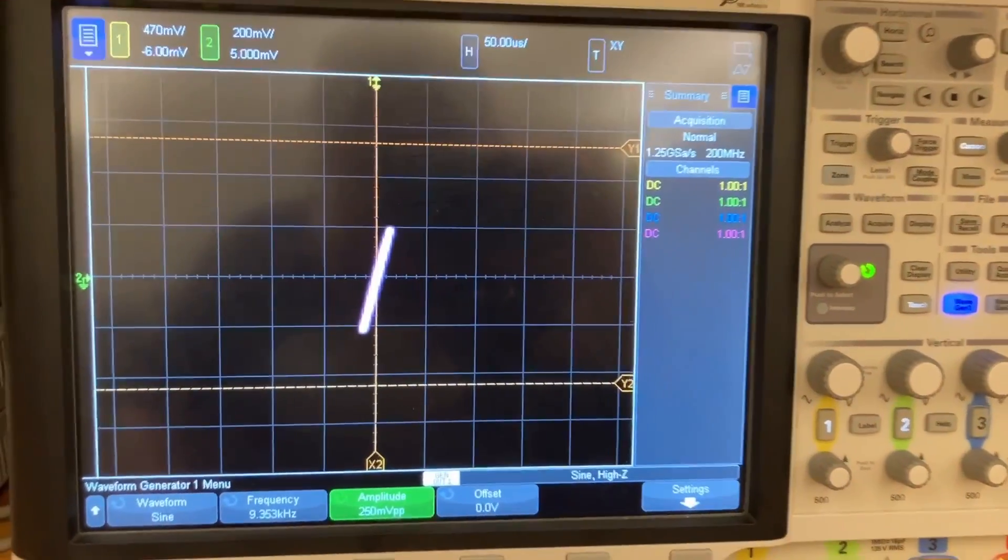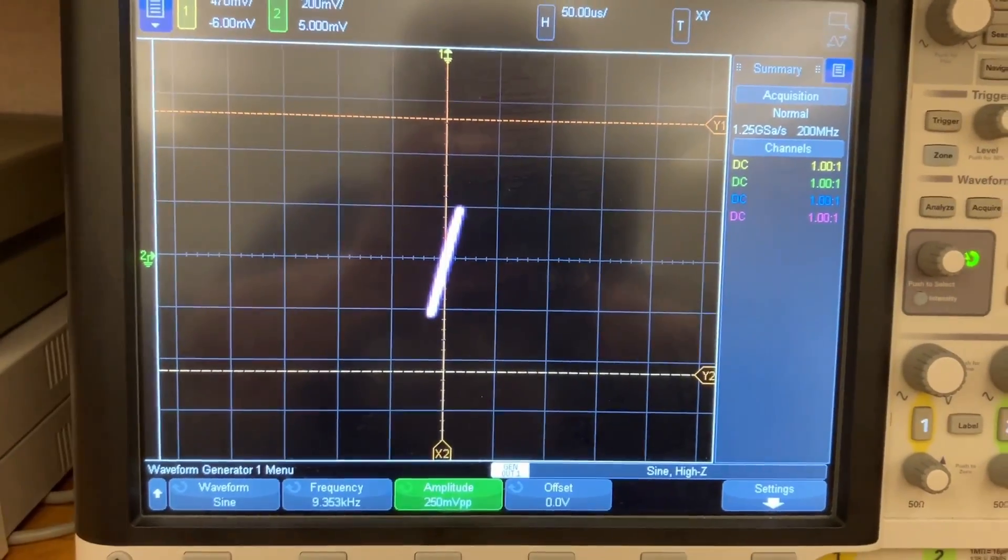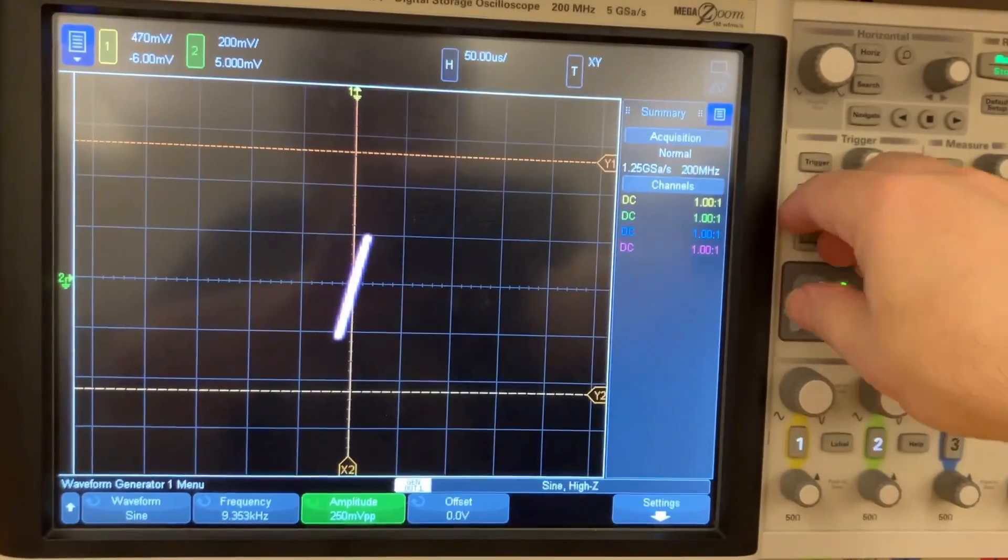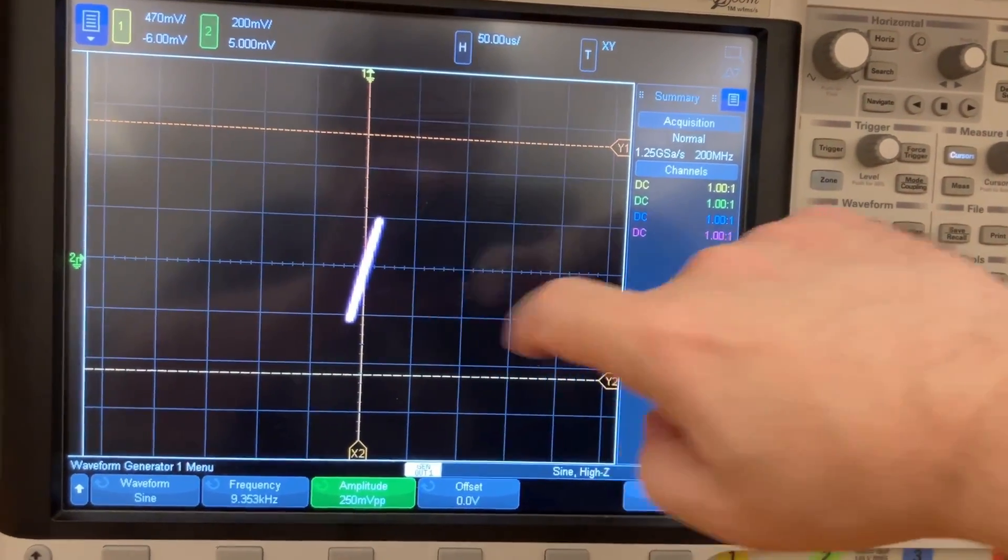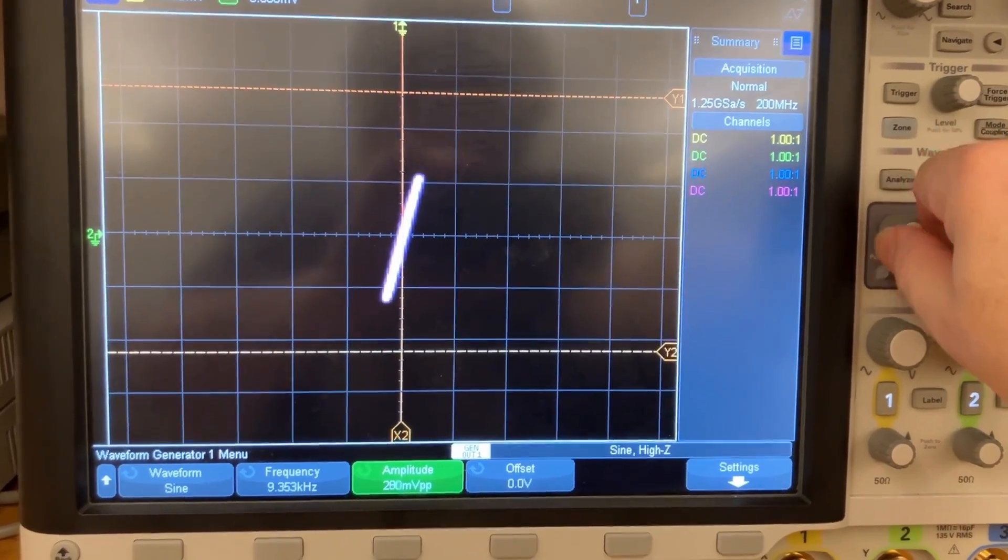Right now we have 250 millivolt peak-to-peak signal coming in. And what I'm going to do is increase that, and we'll look at it on the XY plot. So we'll see right now things look fairly linear. And then I'll crank this up.